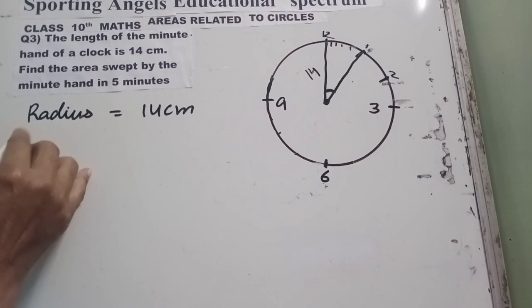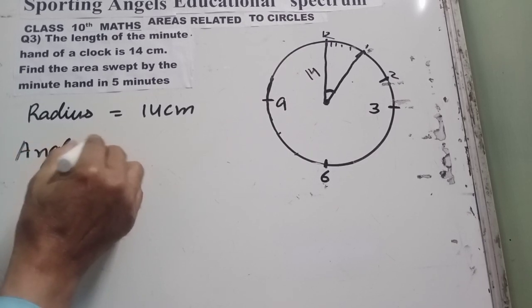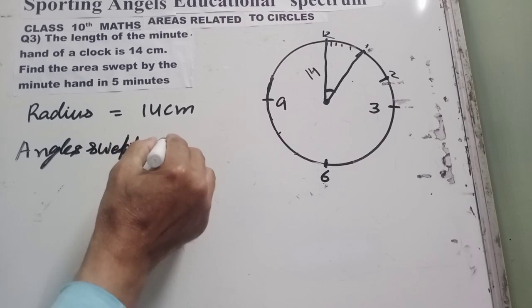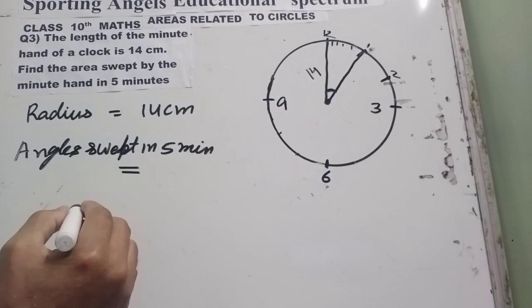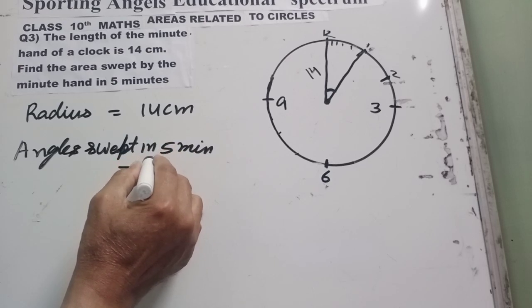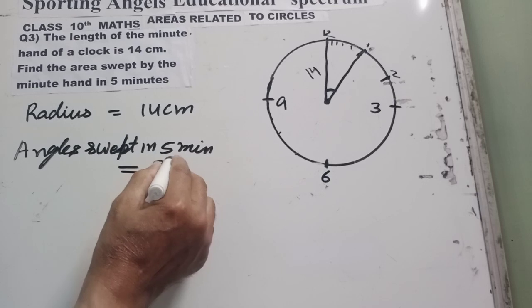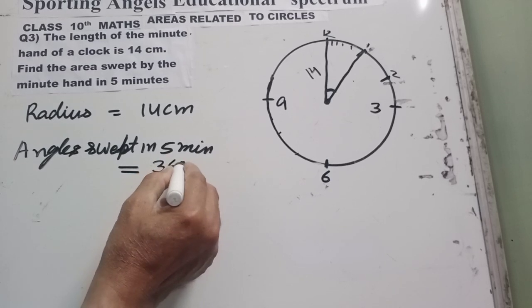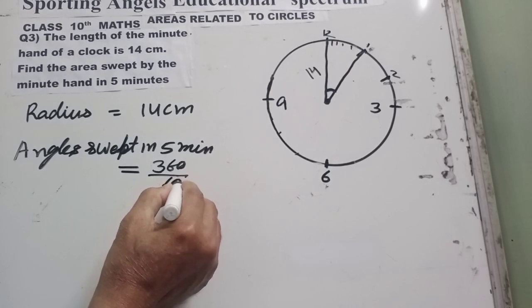Angle swept in 5 minutes is equal to... 5 minutes nikalne se pehle, let me explain. 360 complete revolution mein, it makes, when it makes 360 degree, it covers 60 minutes.